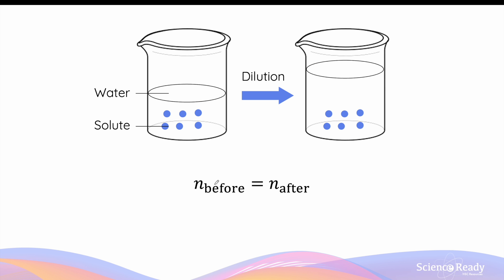Let's put this in mathematical form. The number of moles of the solute before the dilution equals the moles after. Moles can be calculated by multiplying the concentration by the volume — specifically, the concentration should be in molarity (moles per liter) and the volume should be in liters. So we get the expression C1 × V1 = C2 × V2, where C1 and V1 are the original concentration and volume, and C2 and V2 are the concentration and volume after dilution. These are equal because they give the same number of moles before and after.